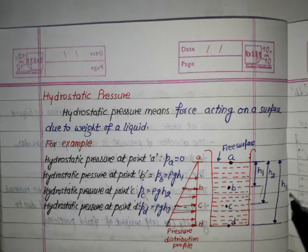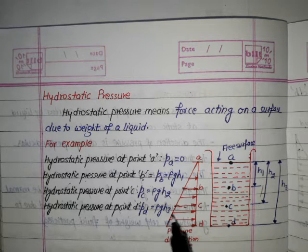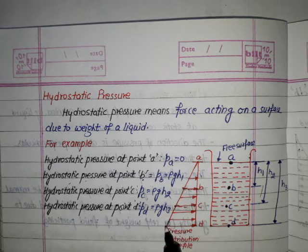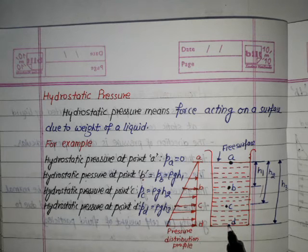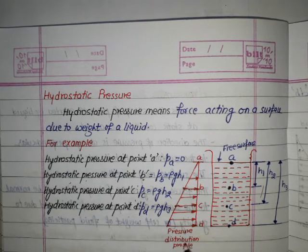Hydrostatic pressure at point D: Pd = ρgh3. This is the maximum depth, so this is the maximum pressure at point D. This is the pressure distribution profile we have drawn.